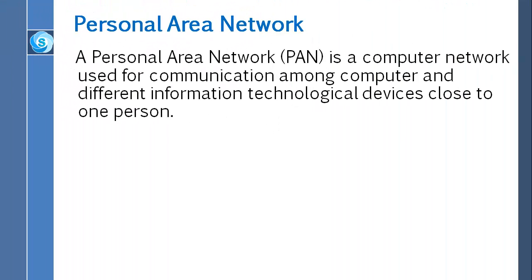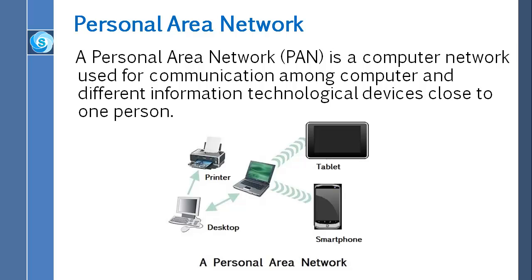Now let's talk about personal area networks. A personal area network, or PAN, is a computer network used for communication among computers and different information devices close to one person. Some examples of devices used in a PAN are personal computers, printers, cell phones, tablets, PDAs, scanners, and even video game consoles. A PAN may include wired and wireless devices. The reach of a PAN typically extends to 10 meters. A wired PAN is usually constructed with USB and FireWire connections, while technologies such as Bluetooth and infrared communication typically form a wireless personal area network.